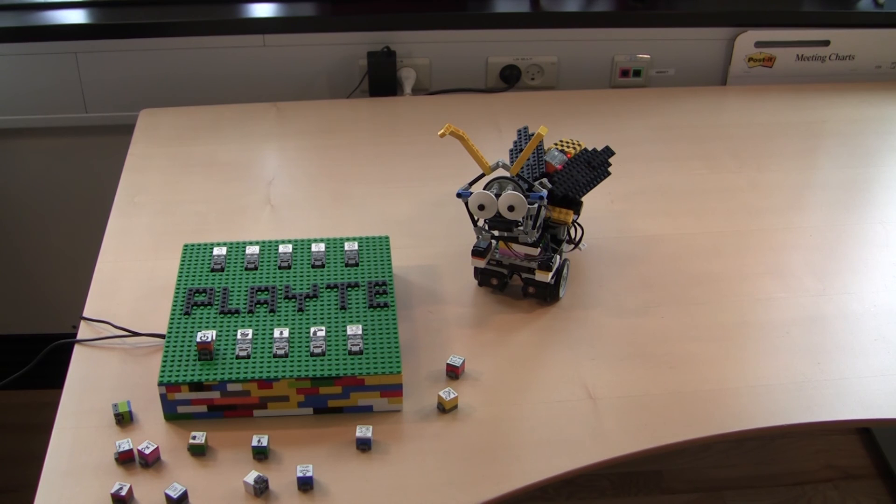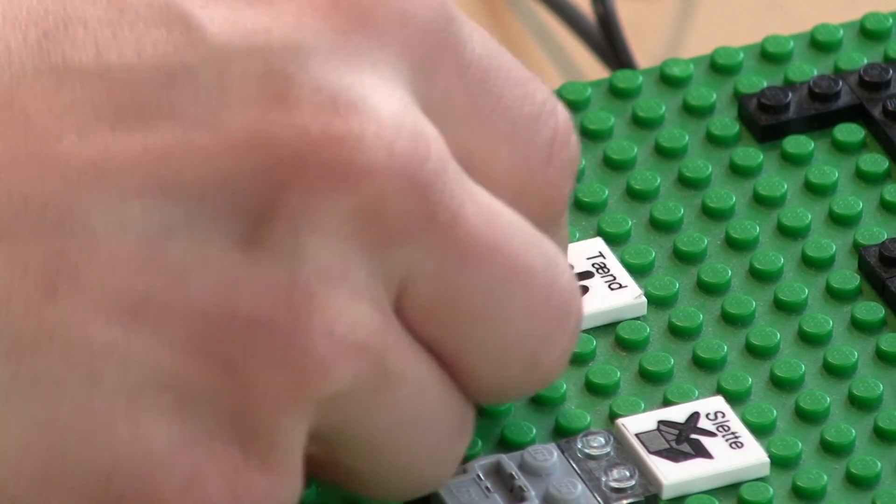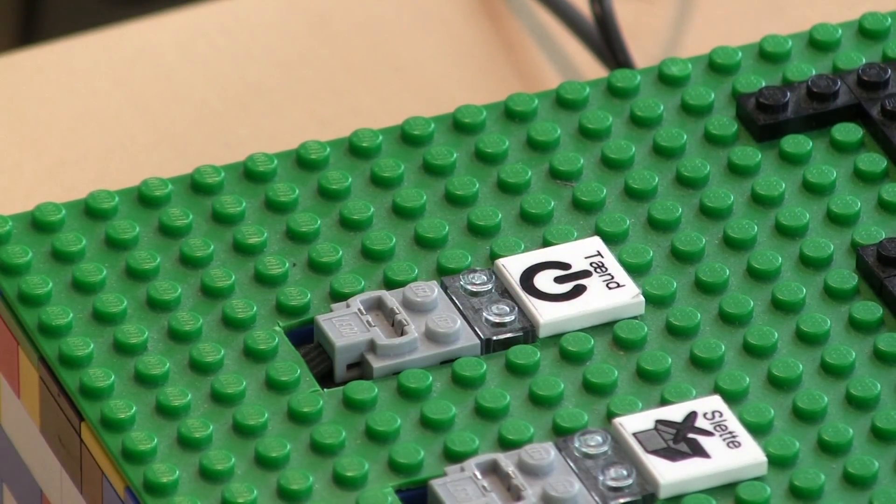The plate interface shows how we can use tangible interactions to control robots in a very child-friendly way. And still allow the children to customise and be creative with the technology.